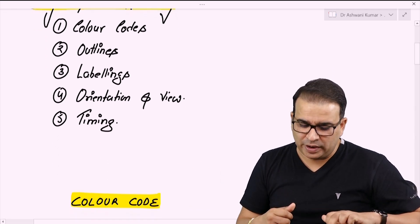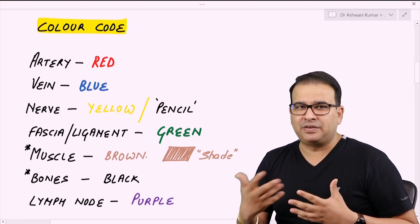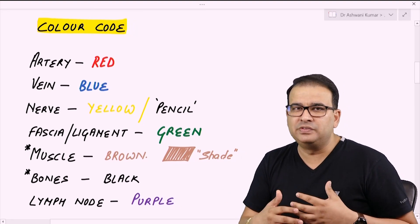The first thing is color coding. We have a universal color code in anatomy: artery is shown with red color, vein is with blue, the nerve is with yellow.